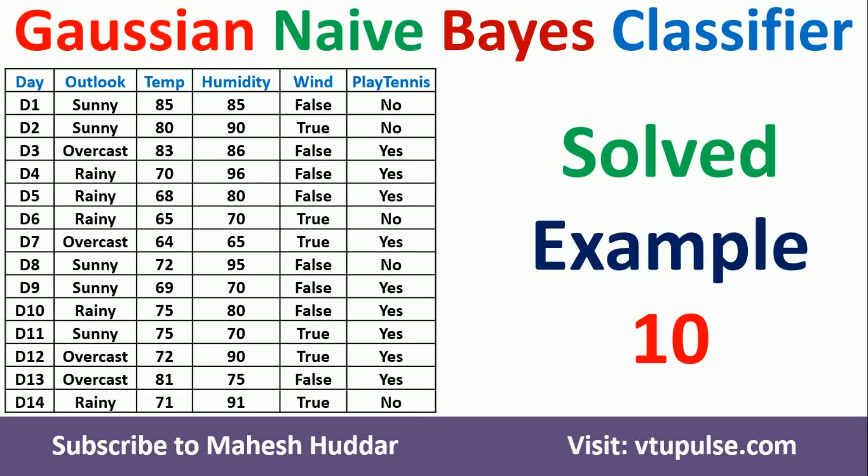Welcome back. In this video, I will discuss how to use the Naive Bayes classifier with Gaussian distribution to handle continuous valued attributes. This is solved example number 10. The link for other examples is given in the description below.